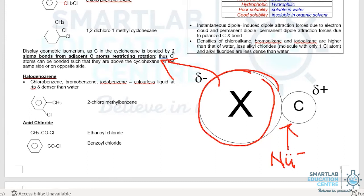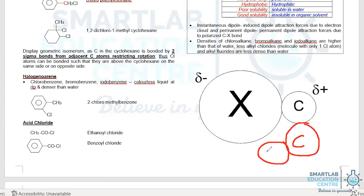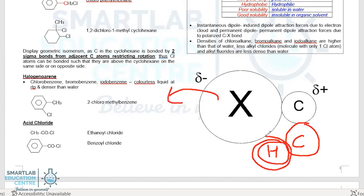The next reaction that could happen is when elimination occurs, meaning to say that X will leave and pull away the hydrogen atoms bonded to the adjacent carbon atom. So both of them will leave and eliminate, producing a C to C double bond.